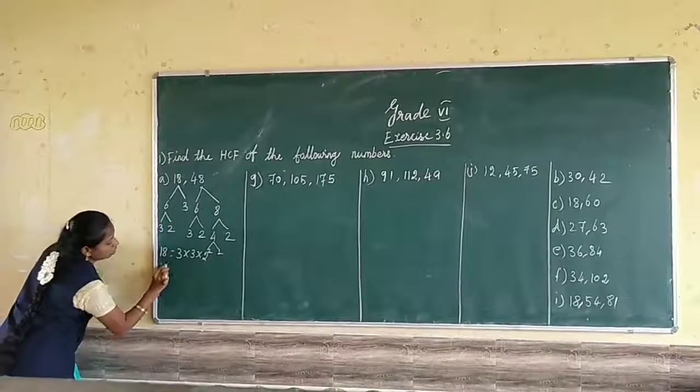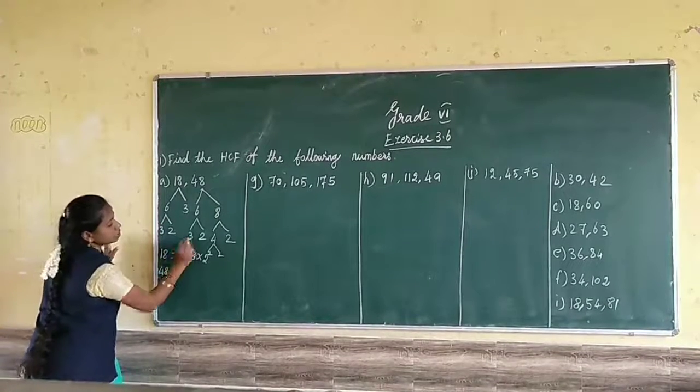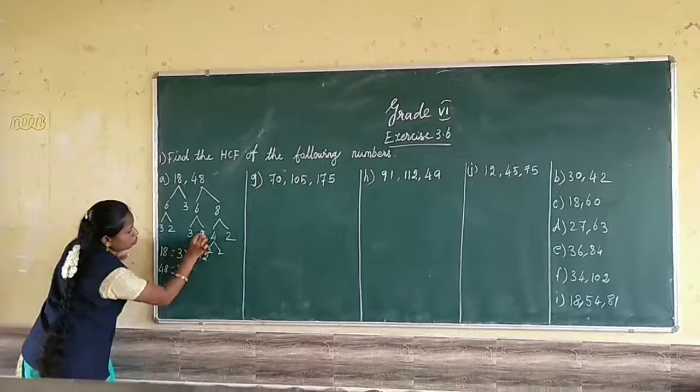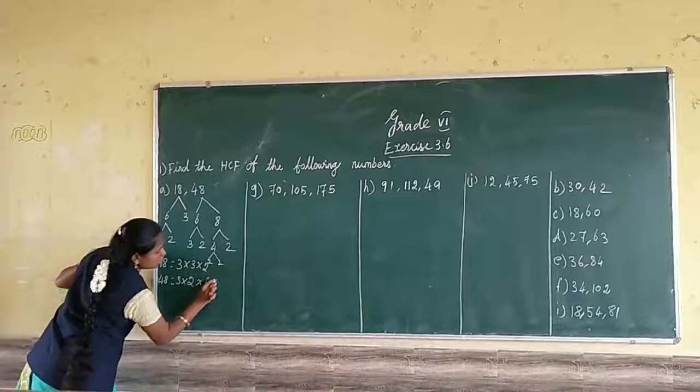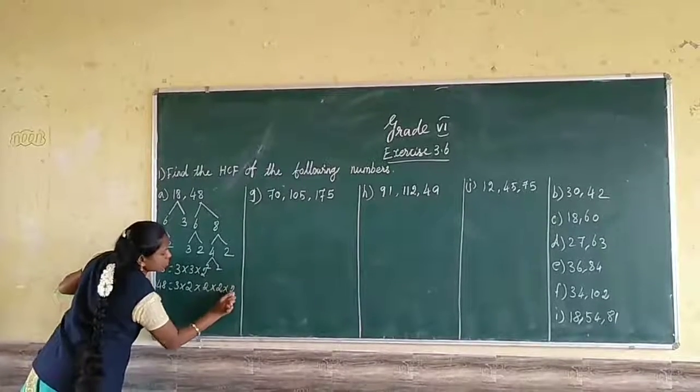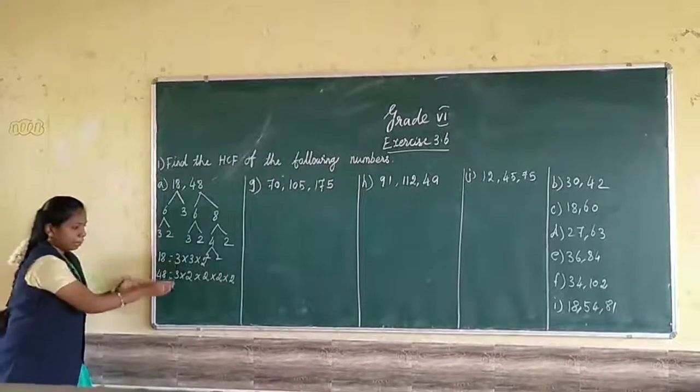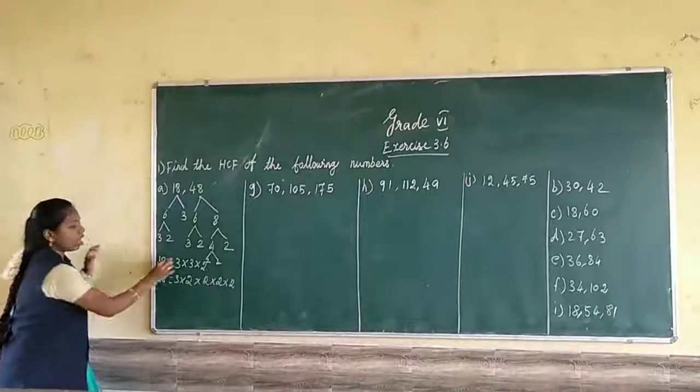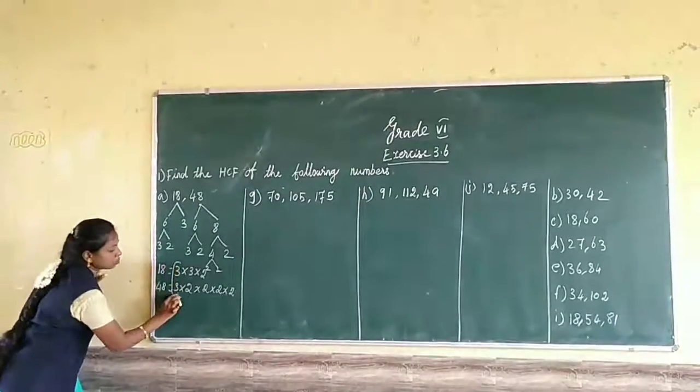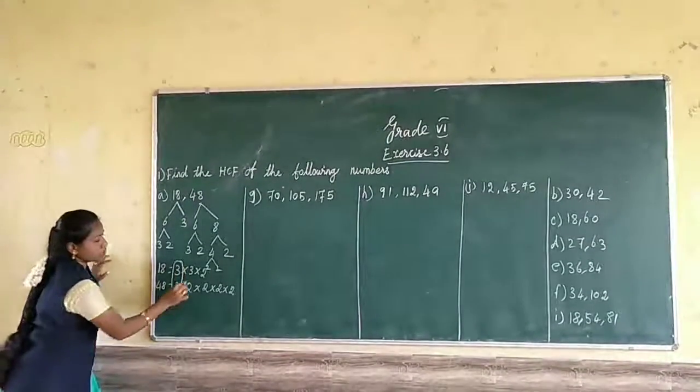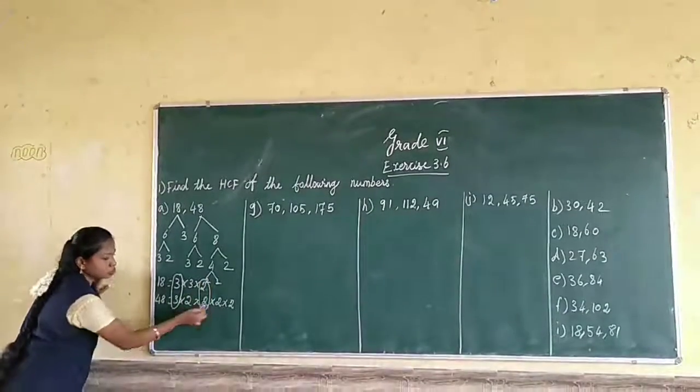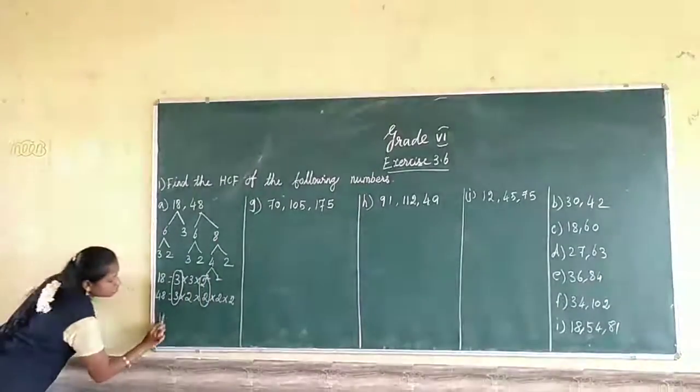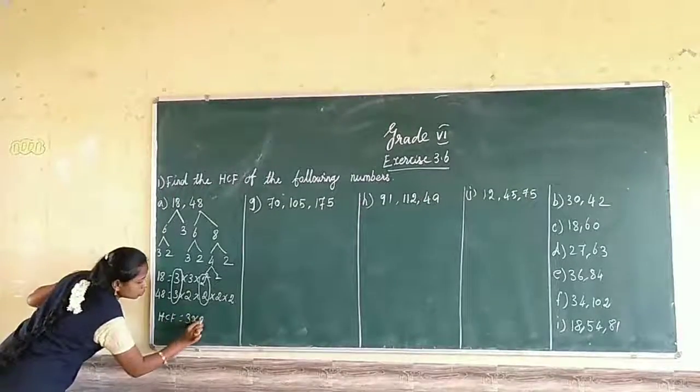In this 2 is common, that is the common factor. One 2, and this 2. So 3 into 2 common. So HCF is equal to 3 into 2.